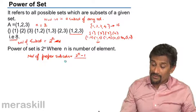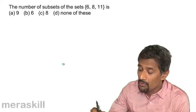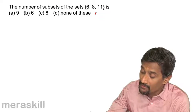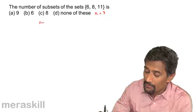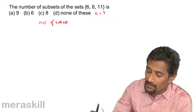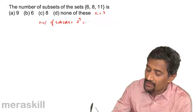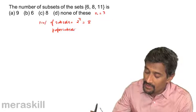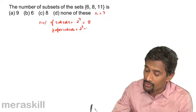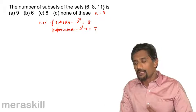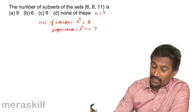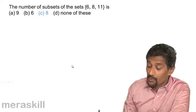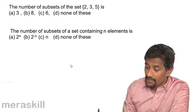Let's apply this formula. For the set {6, 8, 11}, the number of elements n = 3. The number of subsets is 2^3 = 8. If the question asks for proper subsets, it would be 2^3 − 1 = 7. This excludes the set {6, 8, 11} itself from the list of subsets. So the answers are 8 subsets and 7 proper subsets.